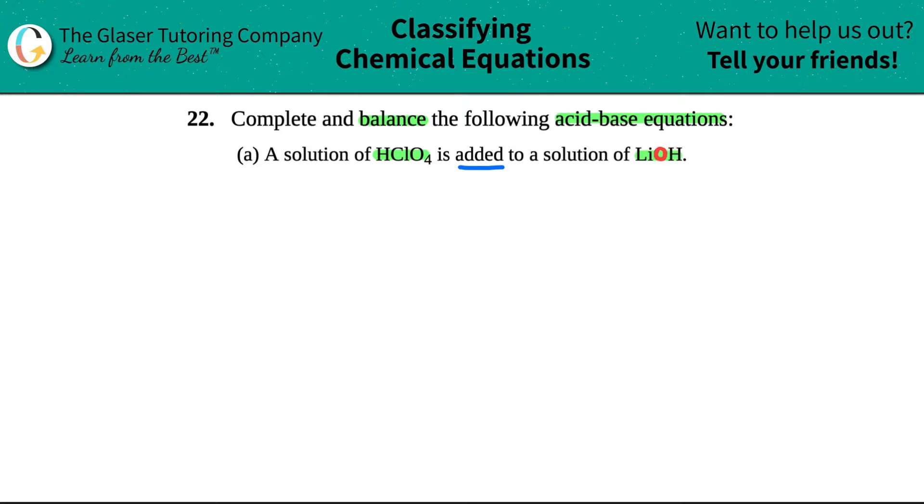Now, both of these are actually strong acids and strong bases. The HClO4, if you guys remember your strong acids, there's six of them. HClO4 is a strong acid. Maybe I should put that in red because generally acids are represented as red. So HClO4 is a strong acid, and LiOH, if we memorize our strong bases, LiOH is one of our strong bases.